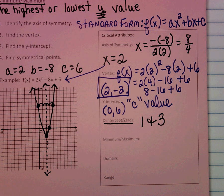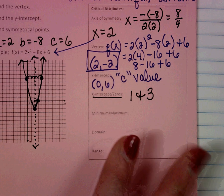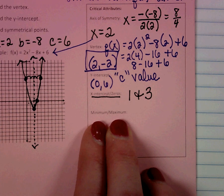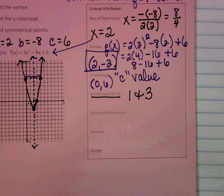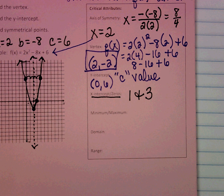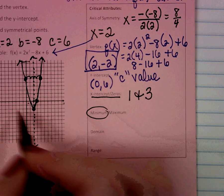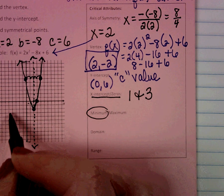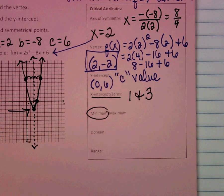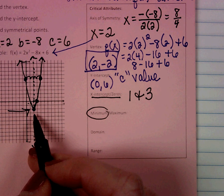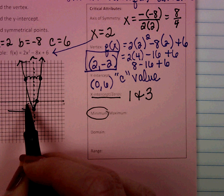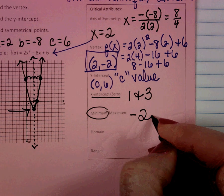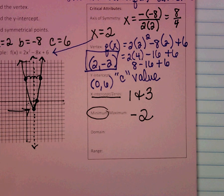Now we have a picture of our parabola drawn. Let's talk about some other critical attributes. The next one is minimum or maximum. Since our graph is opening up, we have a minimum point — this is the lowest point we're going to have. The minimum value refers to the y-value, which is negative 2. So if asked what is the minimum value, the answer is negative 2.